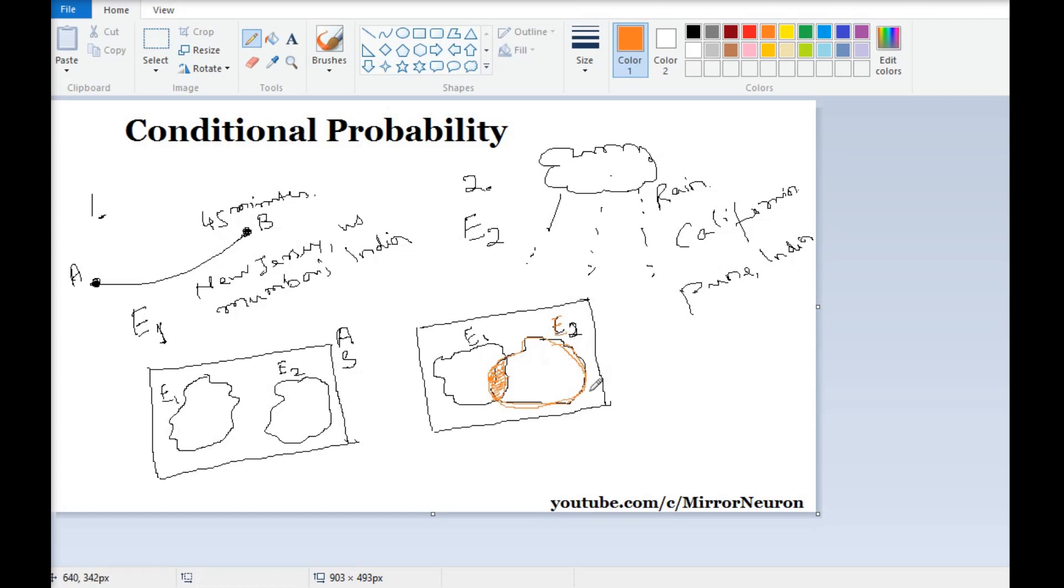If I have to mathematically write this, I want to know what portion of my E2 is going to tell me whether I will reach from A to B in 45 minutes or not. This shaded portion, as we have seen earlier, is given by E1 intersection E2, and this is known as conditional probability.